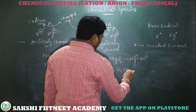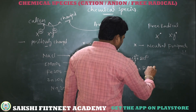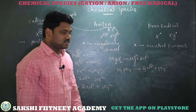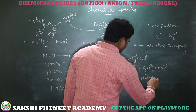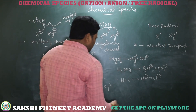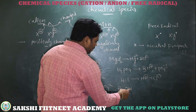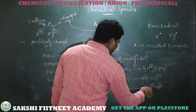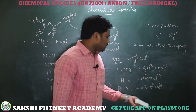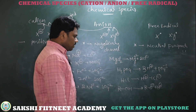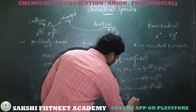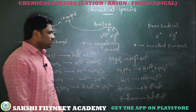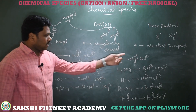H₃PO₄ is a covalent compound that acts as an acid, giving protons — 3H⁺ plus PO₄³⁻. HCl decomposes into H⁺ and Cl⁻. For other organic compounds like alcohol, the oxygen-to-hydrogen bond cleaves heterolytically, giving O⁻ and H⁺ — hydrogen loses an electron and oxygen gains an electron. Carboxylic acid decomposes into carboxylate O⁻ plus H⁺. These are some examples giving cation as well as anion.